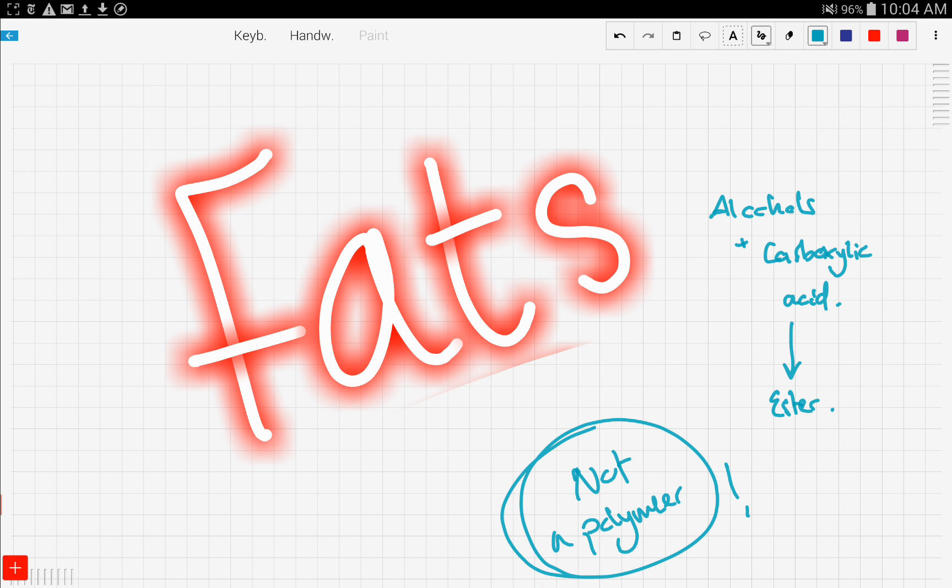We react an alcohol, and this alcohol is usually glycerol, because glycerol has three OH functional groups. And the carboxylic acid usually is a fatty acid.